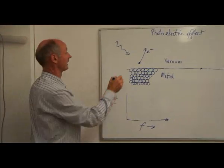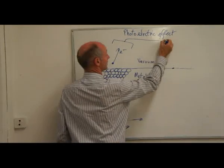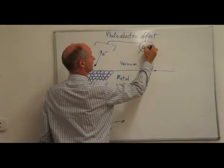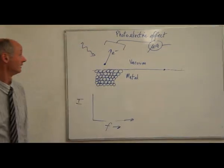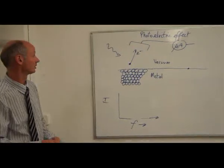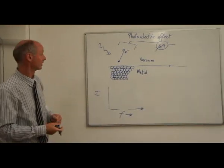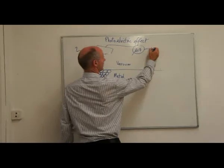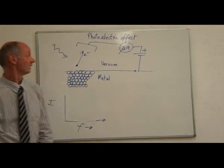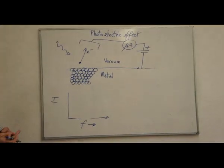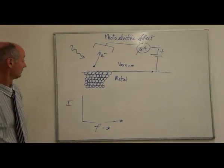We catch the electrons on some sort of electrode, and we can measure the current with a very sensitive meter to see how many electrons are arriving that have been emitted from the metal surface. We can put some sort of power supply there to attract the emitted electrons, with the other end connected onto the metal.